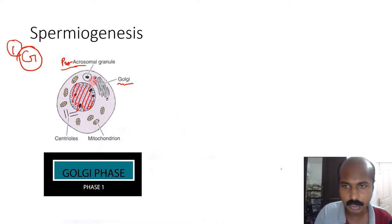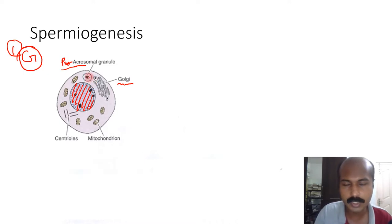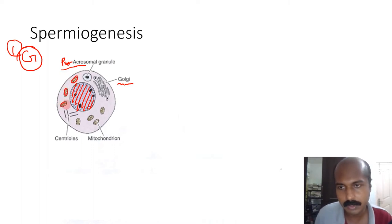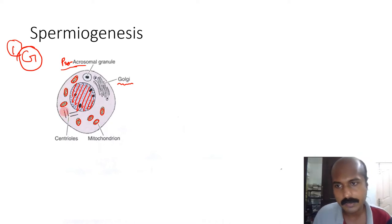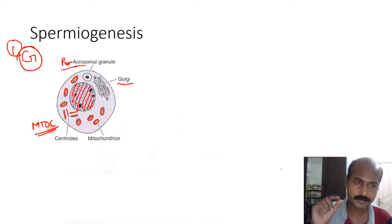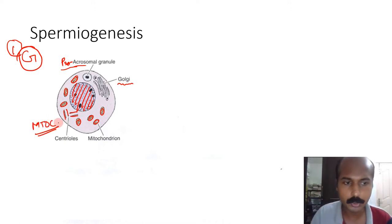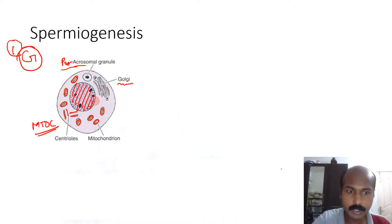During the Golgi phase, pro-acrosomal granules slowly coalesce. Also visible are surrounding mitochondria, whose location and arrangement will change later. Centrioles — the microtubule organizing centers (MTOCs) — are also present; they organize microtubules that form the skeleton of a flagellum.